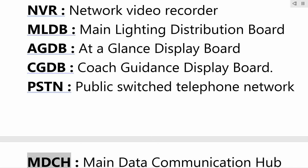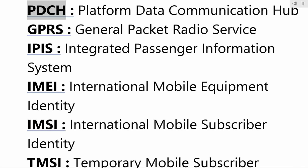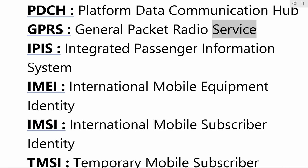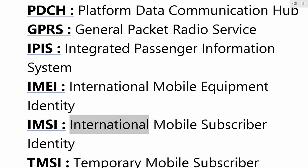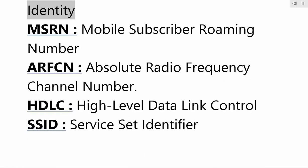MDCH — main data communication hub; PDCH — platform data communication hub; GPRS — general packet radio service; IPIS — integrated passenger information system; IMEI — international mobile equipment identity; IMSI — international mobile subscriber identity; TMSI — temporary mobile subscriber identity; MSRN — mobile subscriber roaming number.